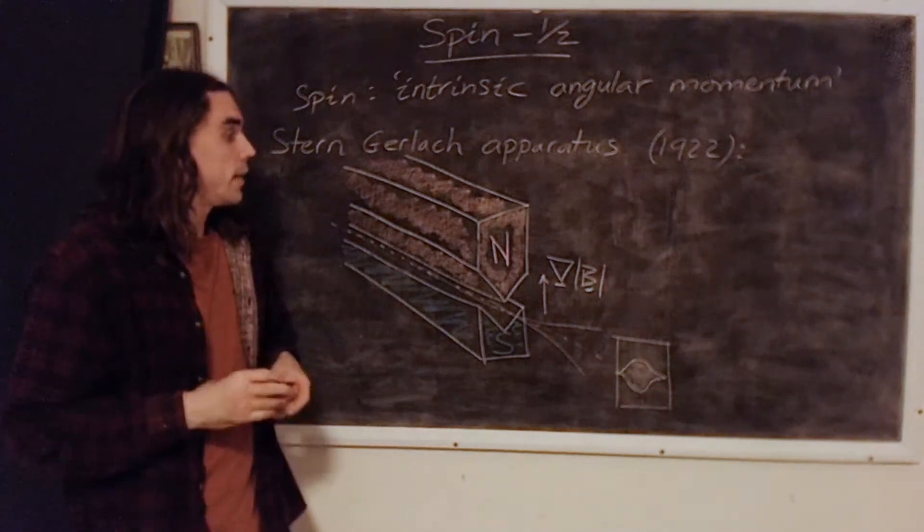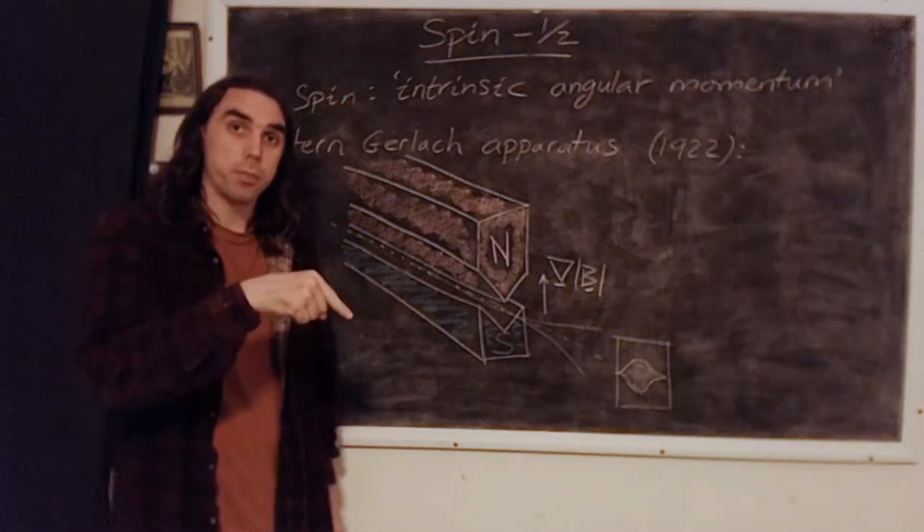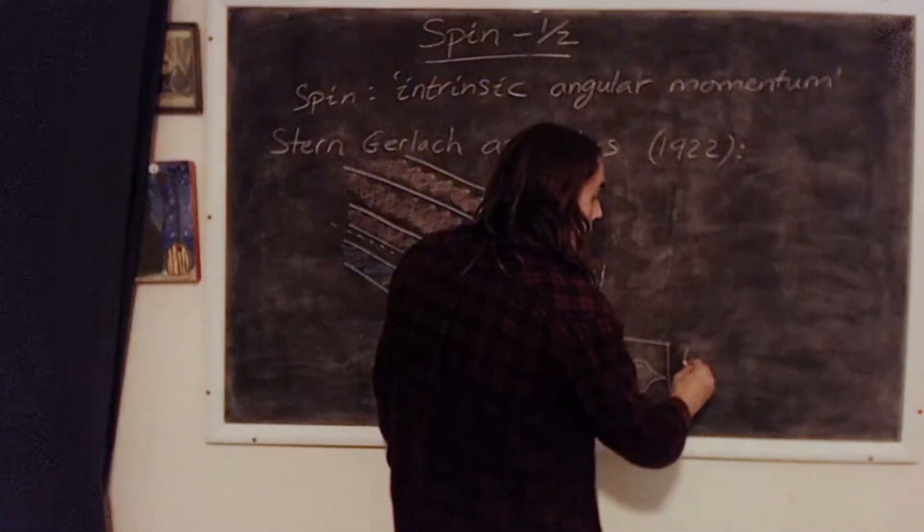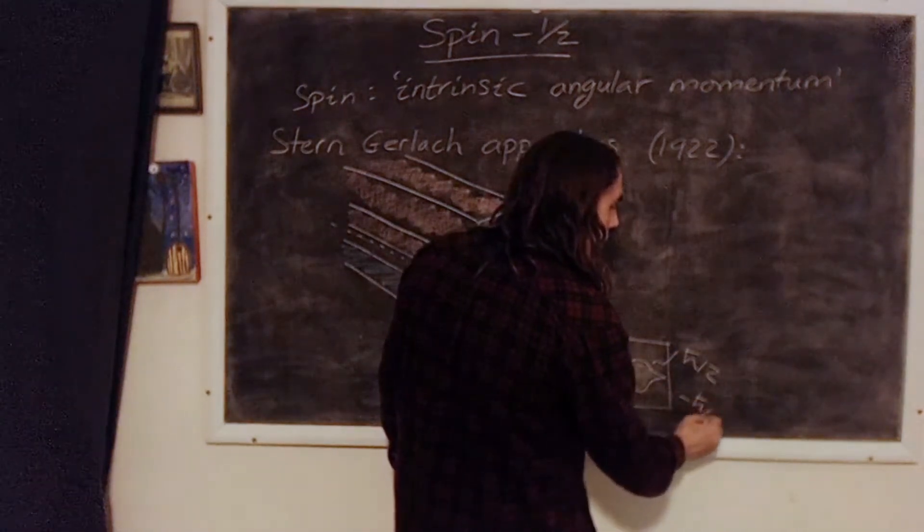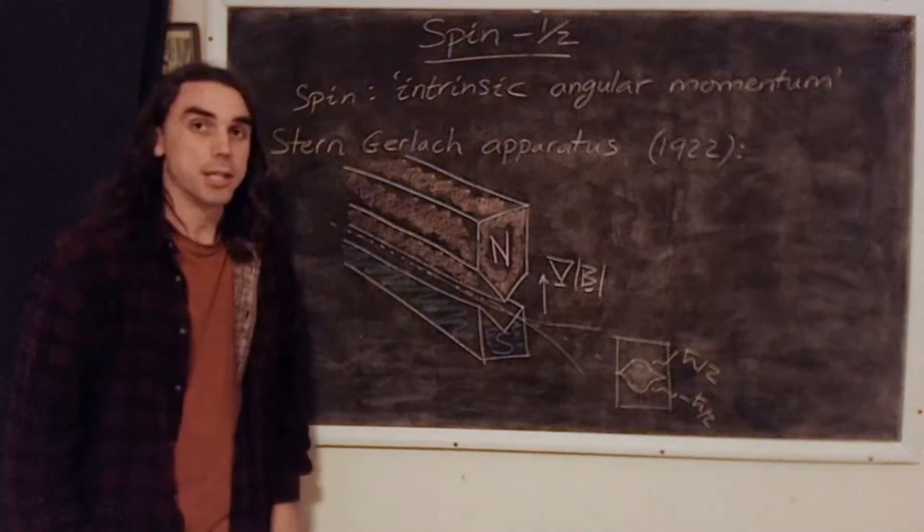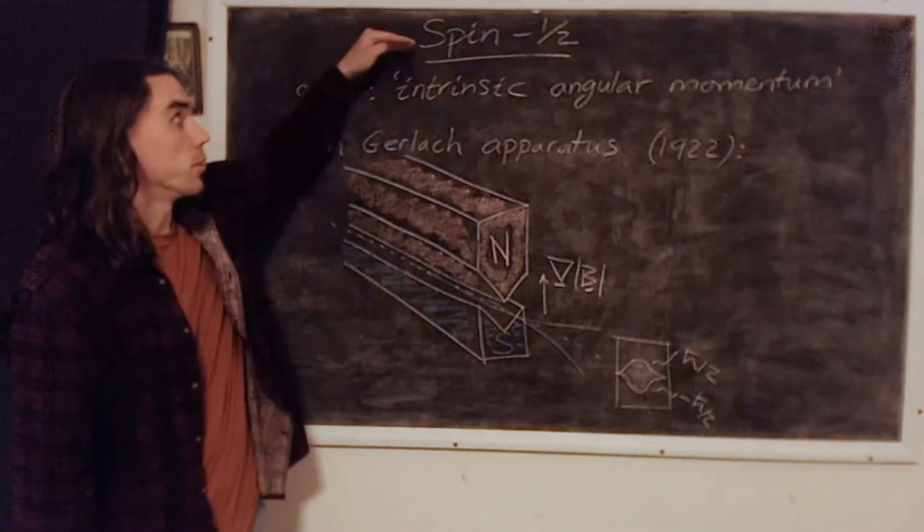So it seems that whenever we measure the spin of the electron along any direction, it always takes one of two values. And those values are either plus h-bar over 2 or minus h-bar over 2. So plus or minus a half in units of the reduced Planck's constant h-bar. And so the electron is what we call spin a half.